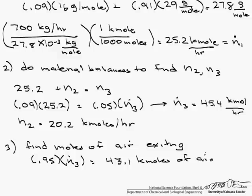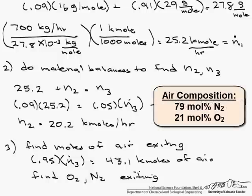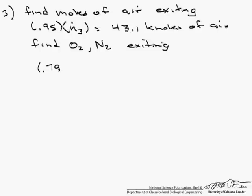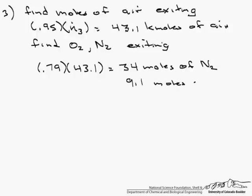So once we find the moles of air exiting, we can find the moles of O2 and N2 that are exiting. How do we do that? Well 79% of air is N2, and 21% of air is O2, and that's in mole fractions. So 0.79 of 43.1, which are the kilomoles of air exiting, equals 34 moles of N2, and 43.1 minus 34 leaves us 9.1 moles of O2.